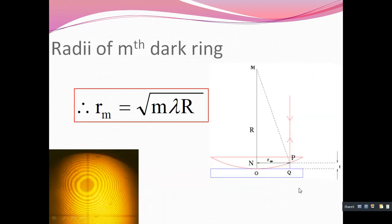The radius of the mth dark ring: this diagram shows the plano-convex lens in contact with the plane glass plate. O is the point of contact, and rm denotes the radius of the mth order ring. For the mth order ring, the radius is denoted by rm, the thickness of the film is t, and R is the radius of curvature. The radius of the ring is given by rm = √(mλR), meaning it is related to the radius of curvature by this equation.